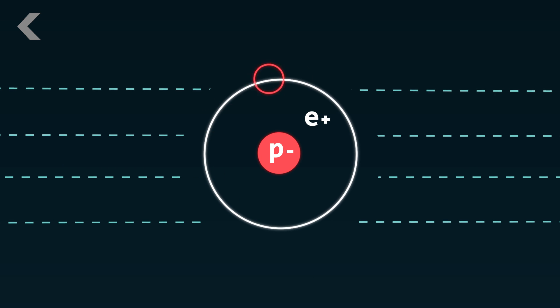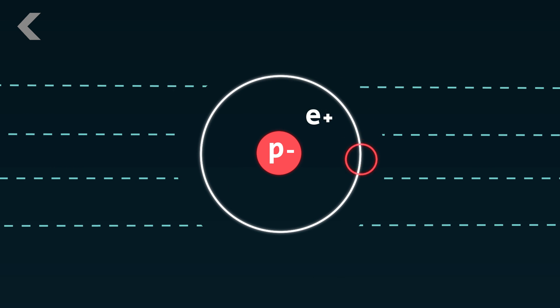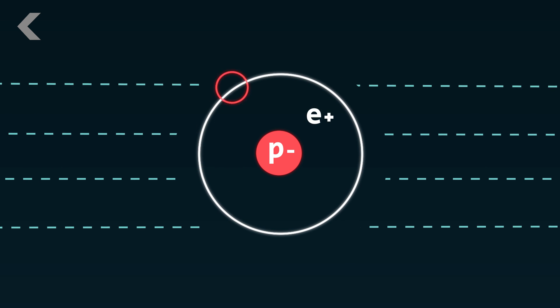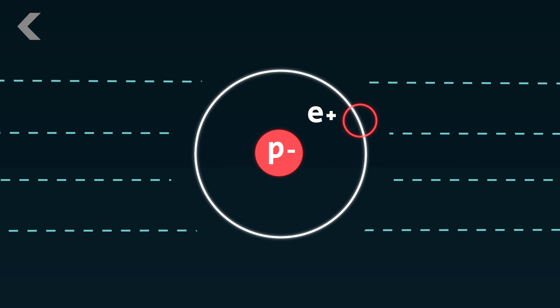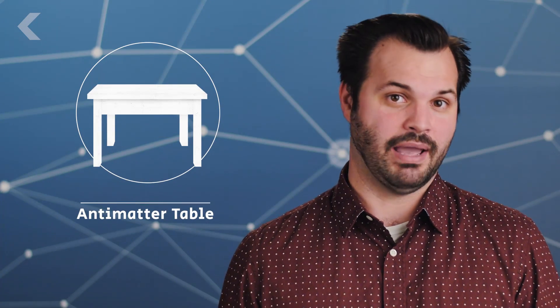Once they've trapped the antimatter, the scientists at the factory can learn things about this mysterious mirror of our universe. Disappointingly, antimatter isn't some kind of miracle form of matter. It doesn't have anti-gravity properties. It doesn't do anything different at all. If you could somehow find a way to build a table out of antimatter, it would just be a table.